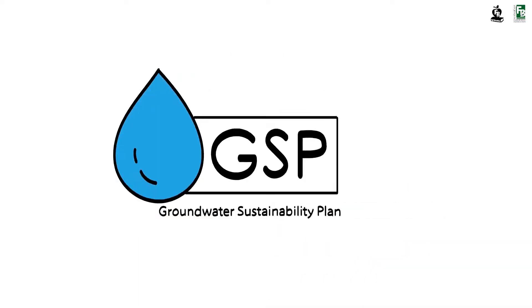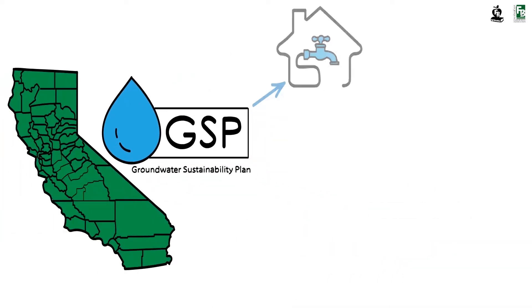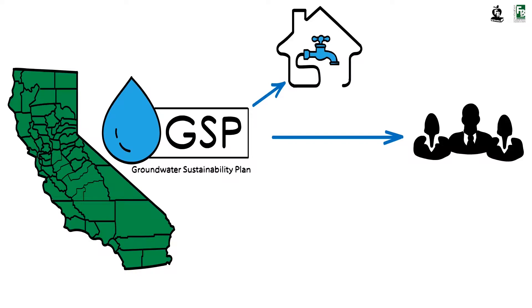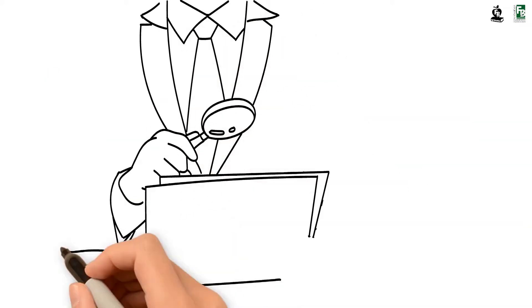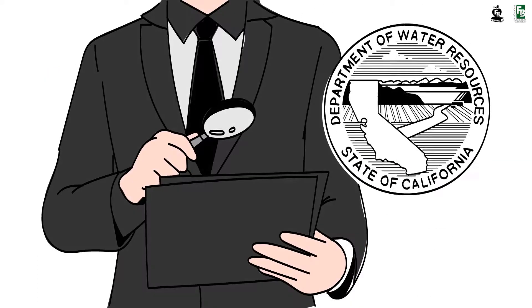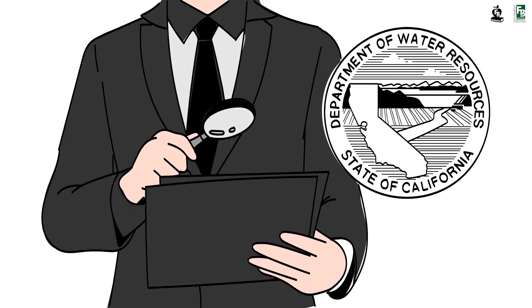The GSP was developed by 17 stakeholder groups, including water districts, city and county representatives, and advisory agricultural organizations like the San Joaquin Farm Bureau. The Eastern San Joaquin sub-basin's GSP was submitted to the Department of Water Resources for review. Once reviewed and approved,